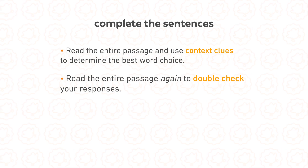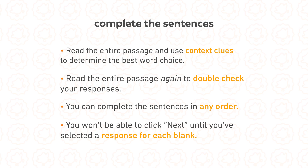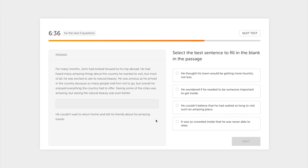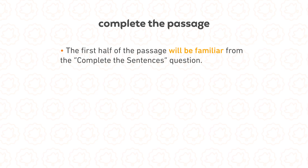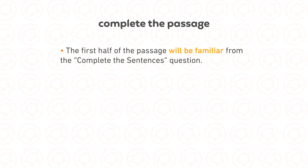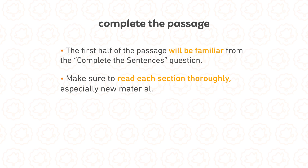You can complete the sentences in any order, and you won't be able to click next until you've selected a response for each blank. Next up is the complete the passage question. Complete the passage asks you to select the best sentence to fill in the blank. In this task, you'll see two sections of the passage with a missing sentence in the middle. Make sure to read each section thoroughly, especially the new material.